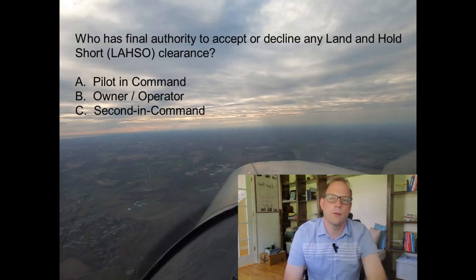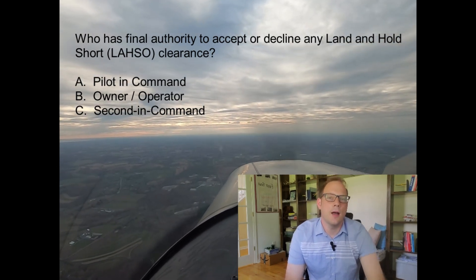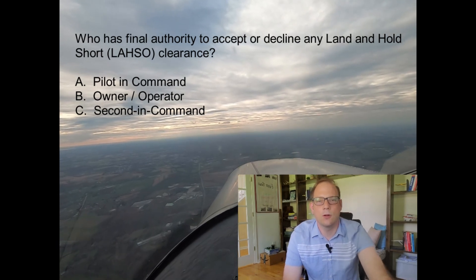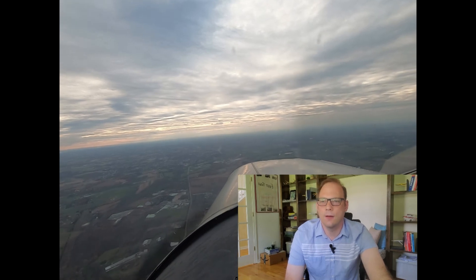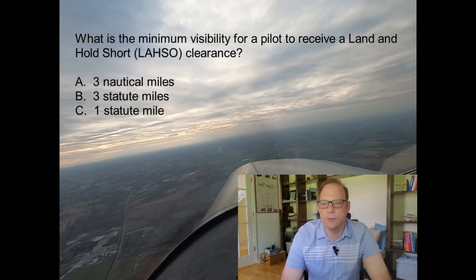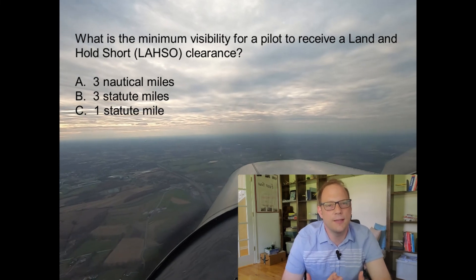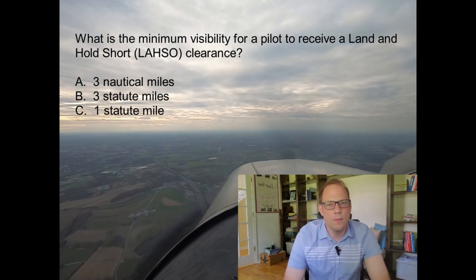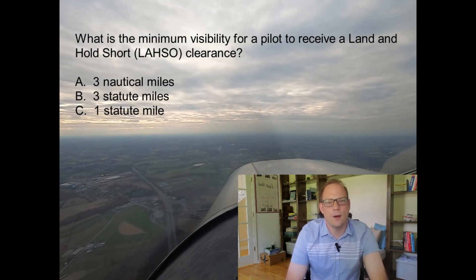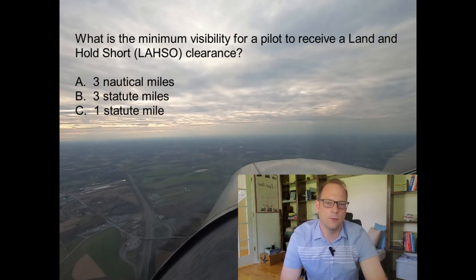Question two: who has final authority to accept or decline any land and hold short clearance — the PIC, owner/operator, or second in command? The correct answer is A, the pilot in command. Question three: what is the minimum visibility for a pilot to receive a land and hold short clearance — three nautical miles, three statute miles, or one statute mile? The answer is B, three statute miles. Remember, visibility is reported in statute miles, not nautical miles. The minimum weather is a ceiling of at least 1,000 feet and visibility of three miles, allowing pilots to maintain visual contact with other aircraft and ground vehicles during the operation.